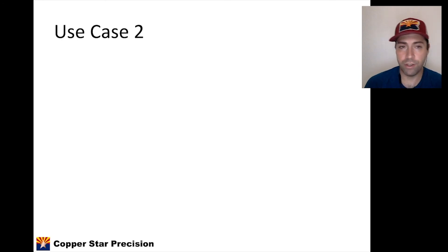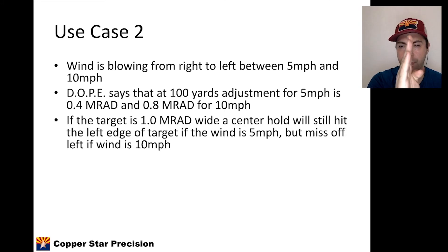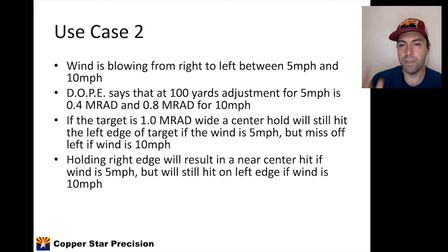Use case two, we can use for wind. Wind is blowing from right to left between 5 and 10 miles an hour. Our DOPE, data on previous engagement, says that at 100 yards, our adjustment for 5-mile-an-hour wind is 0.4 mils and 0.8 mils for 10 miles an hour. That's what our DOPE card and ballistic calculator tell us. So if the target is 1 mil wide, if I hold dead center, I will still hit the left edge of the target because the wind is blowing from right to left if the wind is 5 miles an hour. But if it's pretty much anything more than that, I'm going to miss off the left side. But knowing this, I can hold close to the right edge, and if it's 5 miles an hour, it will actually move towards the center because the target is about 1 mil wide, so it's half a mil is the radius of the target to the center. And the DOPE says it's going to move 0.4 if it's 5-mile-an-hour wind or 0.8. So if I hold right edge, I should get close to a center hit if the wind is 5. But even if I was wrong in my estimation or there was a small gust that jumped up to 10 miles an hour, I'll still hit the left edge of the target.